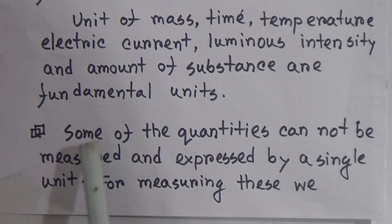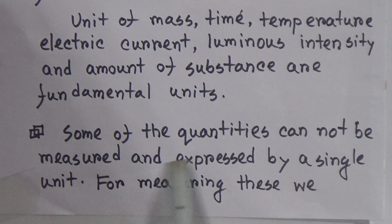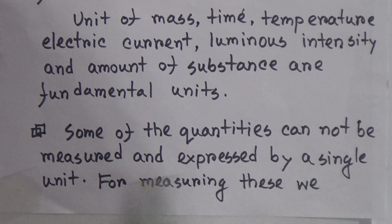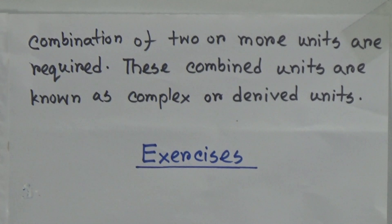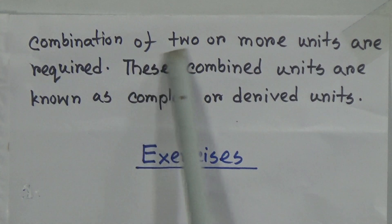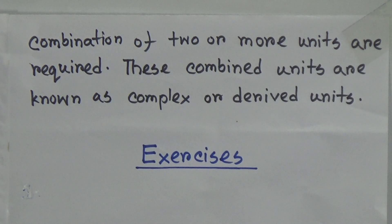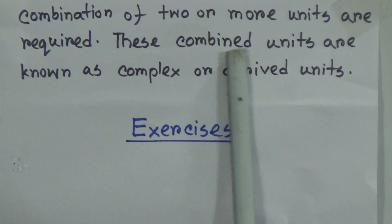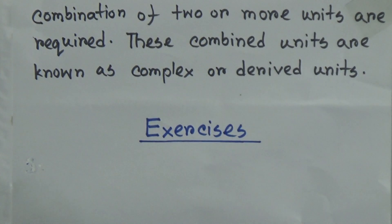And what is a derived unit? Some quantities cannot be measured and expressed by a single unit. For measuring these, a combination of two or more units is required. These combined units are known as complex and derived units.